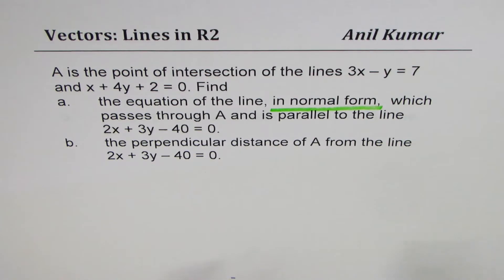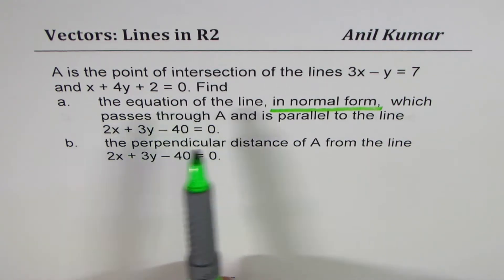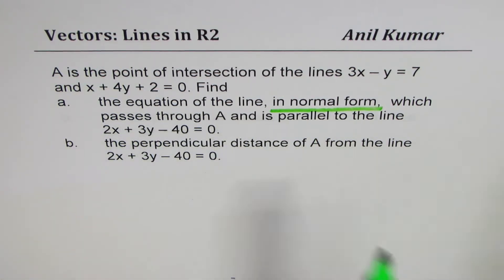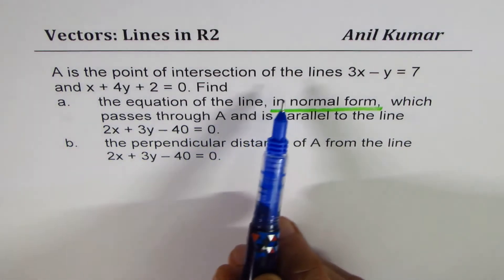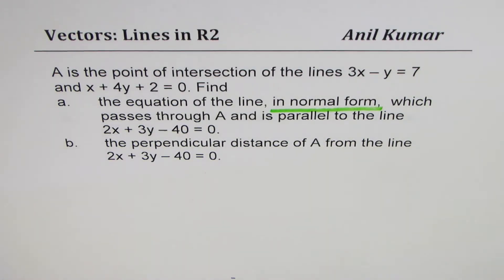The question from one student is about the problem itself, and from the other student it is to understand how to write equations in normal form. The other student is not really into vectors, so I'll have a mixed approach where a student who hasn't done vectors could still be in a position to understand. Whenever time permits, I'll make a separate video on this topic. So let's begin — A is the point of intersection of these two lines.